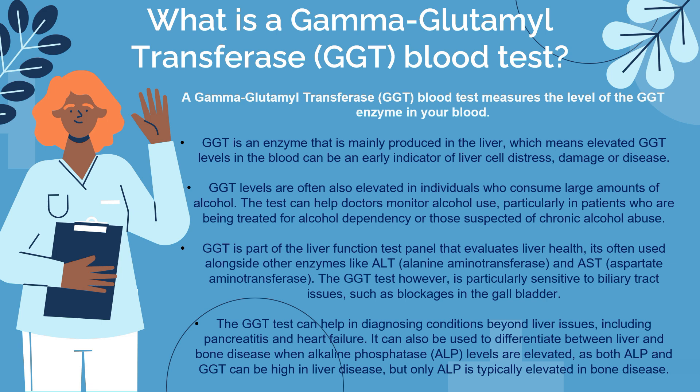The GGT test can also help in diagnosing conditions beyond liver issues, including pancreatitis and heart failure. As mentioned, GGT is abundant in the liver, the pancreas, the kidneys, and the heart muscle tissue as well. So any disease, inflammatory process, or infectious processes involving these organs will all cause raised GGT levels on a blood test.